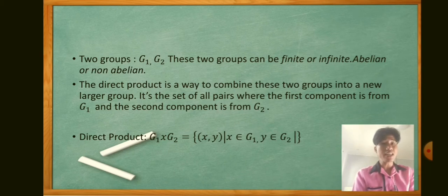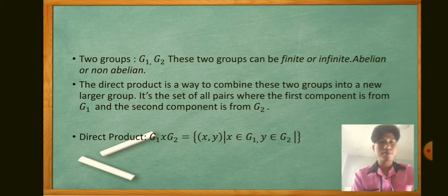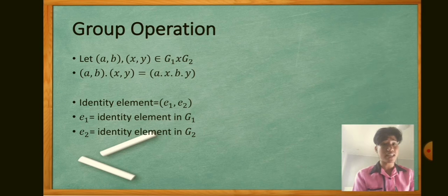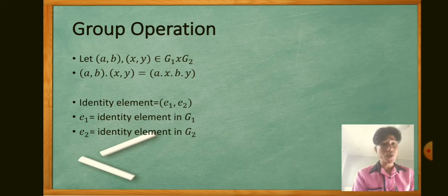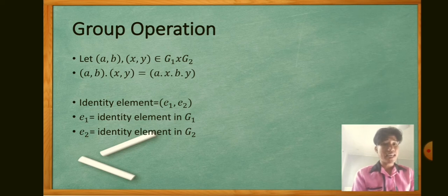It's the set of all pairs where the first component is from G1 and the second component is from G2. So the direct product G1 times G2 equals {(x, y)} where x is an element of G1 and y is an element of G2. For the group operation, let (a, b) and (x, y) be elements of G1 × G2. We multiply them as (a, b)(x, y) = (ax, by). The identity element is (e1, e2), where e1 is the identity in G1 and e2 is the identity in G2.